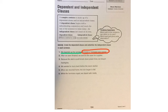Number two: 'After we were finished, we went to the store for supplies.' We have 'after we were finished' and 'we went to the store for supplies.' 'We went to the store for supplies' is a complete sentence — that's your independent clause; it can independently stand on its own. 'After we were finished' is not a complete sentence on its own, so that's your dependent clause, and you're going to circle that.